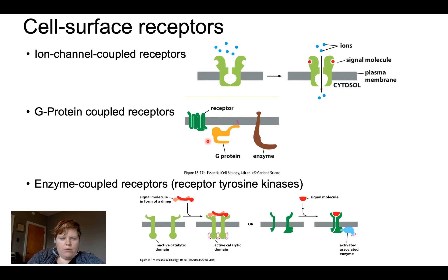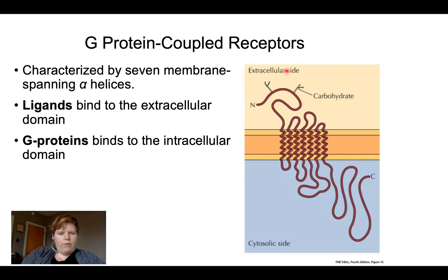G protein coupled receptors have a very similar formula and are found all over the tree of life performing diverse functions. Almost all studied GPCRs have a very specific seven-spanning membrane domain — seven alpha helices that sit in the membrane. They all have some extracellular binding site where signal molecules bind, and an extensive cytosolic side that interacts with GTPases or G proteins.